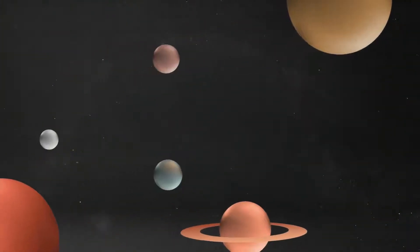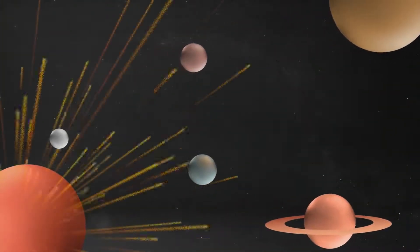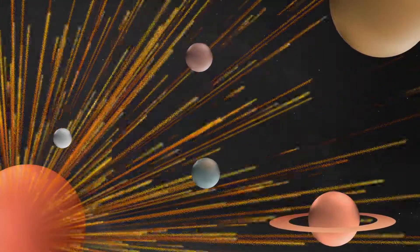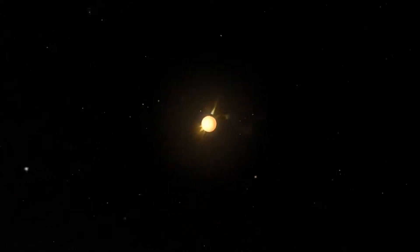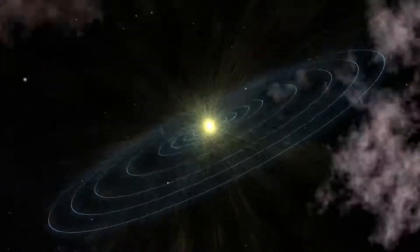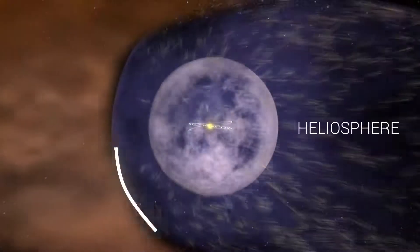There are a few ways to think about the edge of the solar system. One is with the extent of the solar wind. This is the constant flow of charged particles gushing out of the sun at a million miles per hour and bathing the planets. The wind forms a giant protective bubble around our solar system, known as the heliosphere.